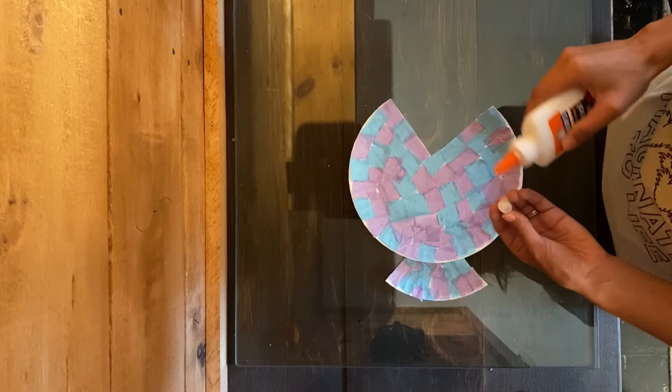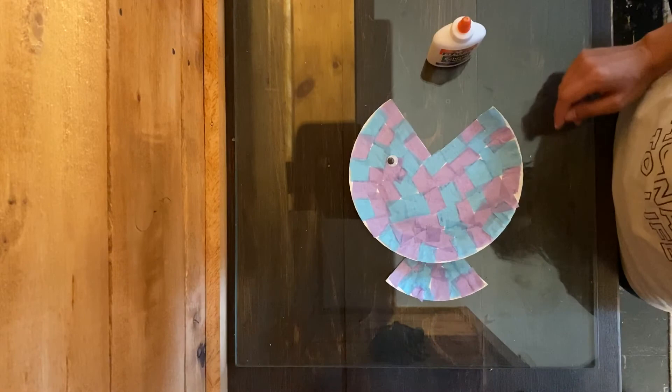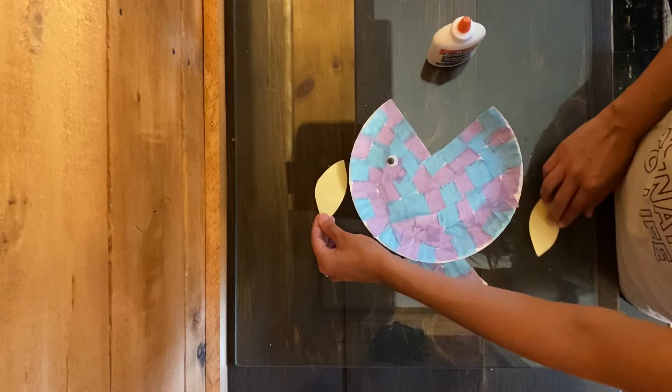The last step is to glue on our fins, which I've cut using yellow construction paper. These we're going to glue to the top and bottom of our fish.